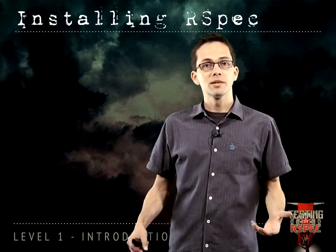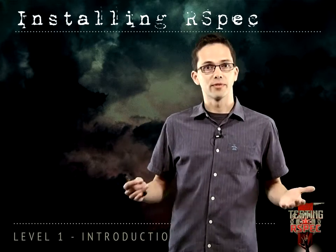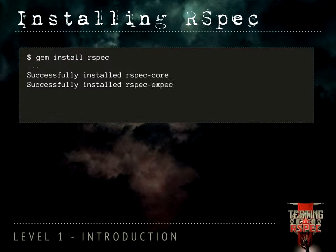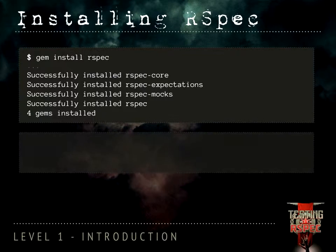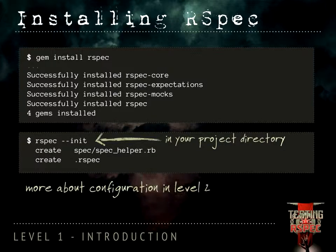Let's jump into building our first RSpec application together. First step, we need to install the gem, so we just type gem install rspec — that's going to install RSpec and all of its dependencies. Then inside of our project directory, we're going to call rspec --init, which will initialize two files for us: the spec helper and the .rspec file, which we'll go into more detail on in level 2.